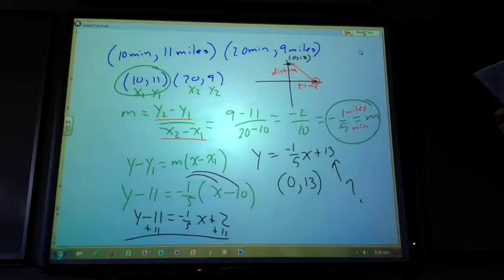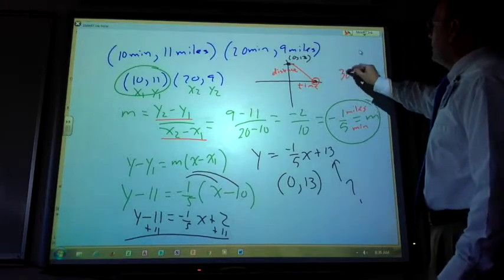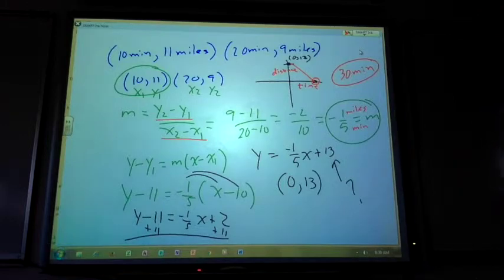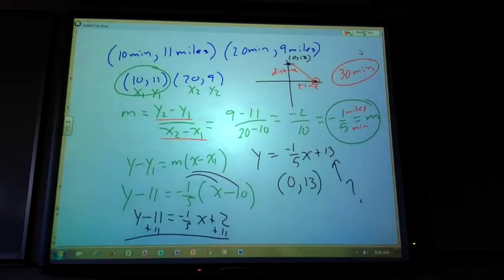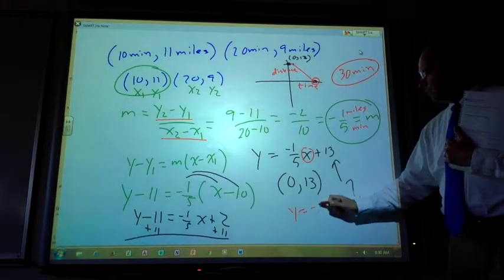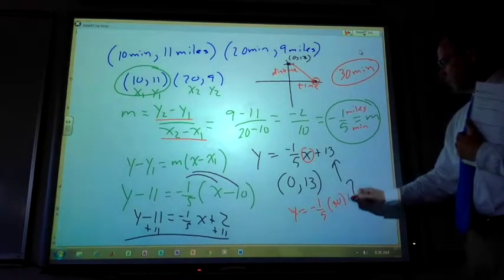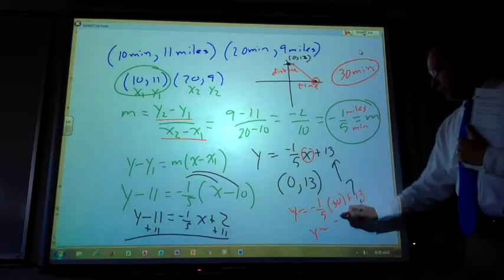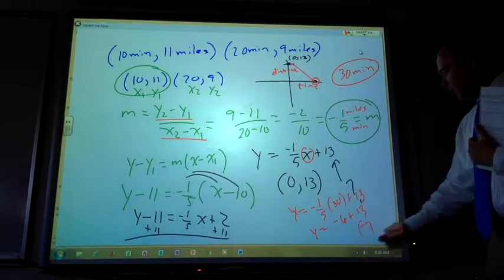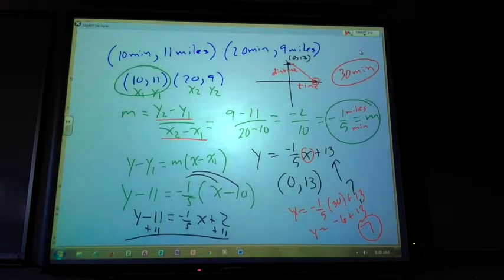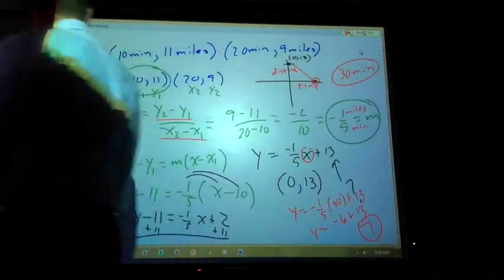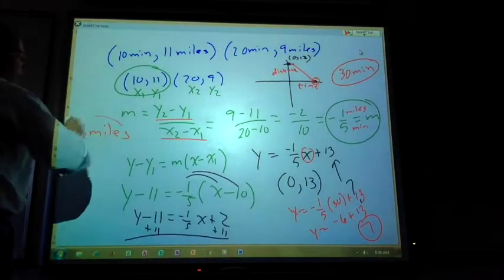How far from school is he after riding 30 minutes? After he's ridden 30 minutes, how close is he to school? Which value is minutes? X. So I'm going to take 30, plug it in right here. Negative one-fifth of 30 is negative 6 plus 13. So he has 7 miles. After 30 minutes of riding his bike, he's 7 miles away. After how many minutes will he be 6 miles from school? When will he be 6 miles from school? Which value is miles? Y.